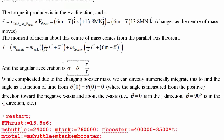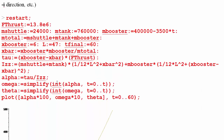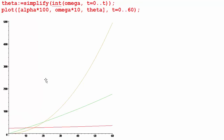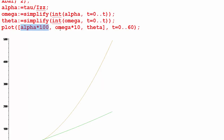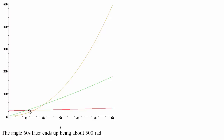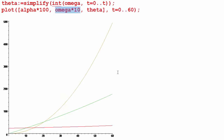The angular acceleration — the second derivative of angle with respect to time — is tau divided by I, where theta is measured from the vertical (theta = 0 is straight up). Substituting into Maple and plotting, the angular acceleration doesn't change much but is a fairly large positive value. Over 60 seconds, this leads to a large angular velocity and a huge number of rotations — about 500 radians total, meaning the shuttle reaches roughly 3 rotations per second by the end.